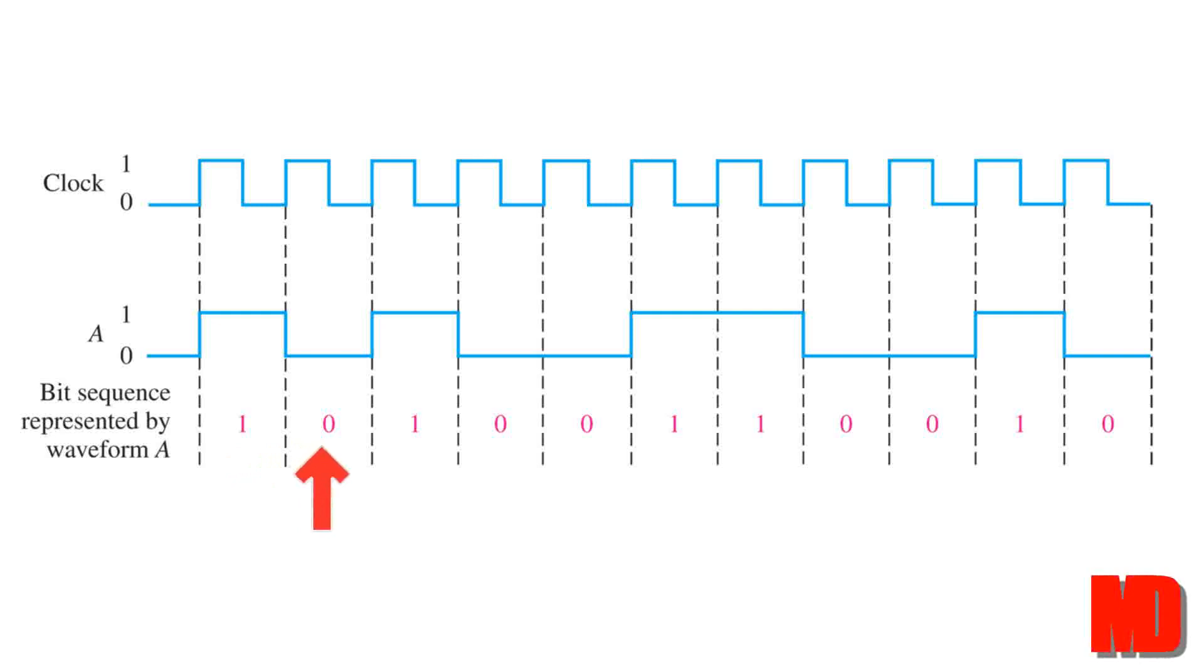In the next bit time, the pulse train is low, and so we get a zero. This continues to the end of the pulse train. The resulting binary sequence, in this case, 1-0-1-0-0-1-1-0-0-1-0, is the bit sequence represented by the waveform.